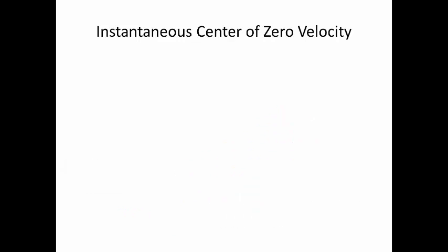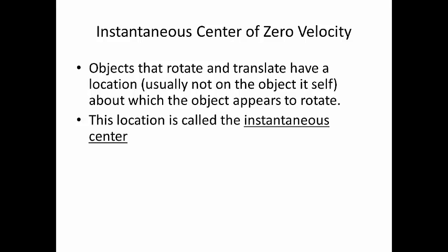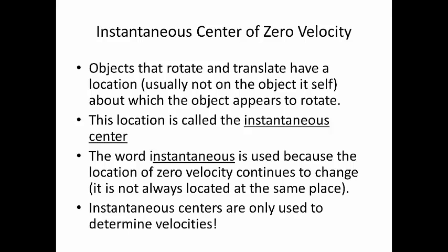What is an instantaneous center of zero velocity? Objects moving in general plane motion — both rotating and translating — have a location, usually not on the object itself, about which the object appears to rotate at that instant. This location is called the instantaneous center. The word instantaneous is used because the location of zero velocity continues to change from one instant to the next. Instantaneous centers are only used to determine velocities.